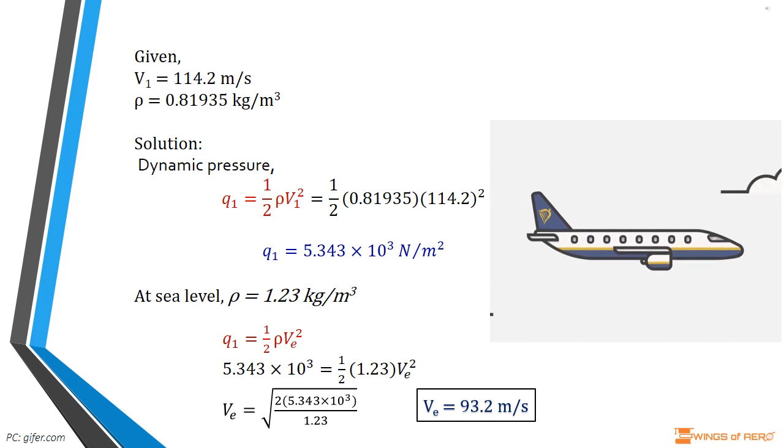We know that dynamic pressure is the increase in a moving fluid's pressure over its static value due to motion. It's defined by Q = 1/2 × ρ × V²